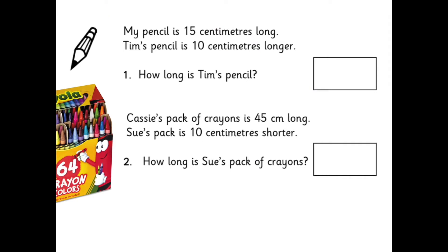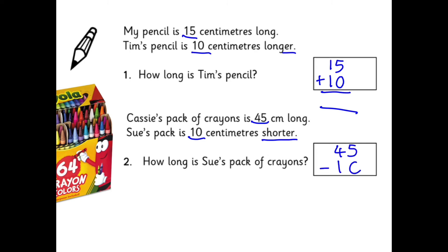My pencil is 15 centimetres long. Tim's is 10 centimetres longer. So that's another add: 15 add 10. And then Cassie's pack of crayons is 45 centimetres and Sue's pack is 10 centimetres shorter. So that's another take away: 45 take away 10.